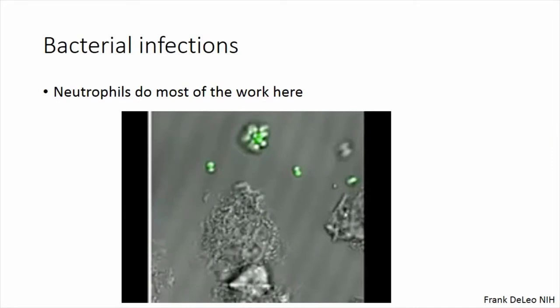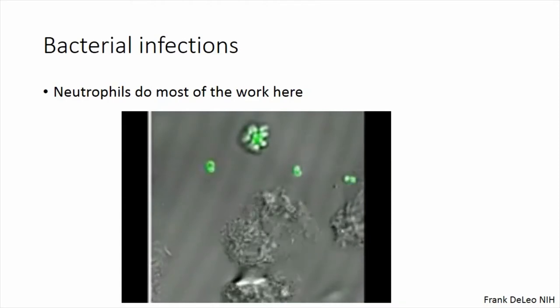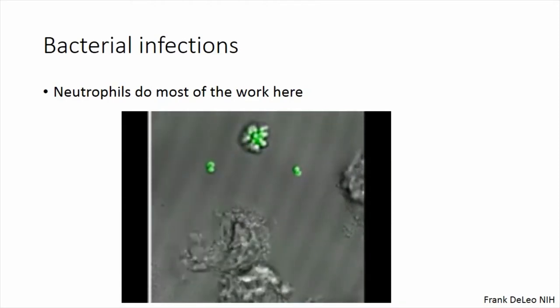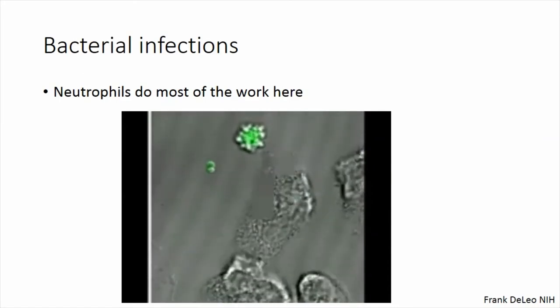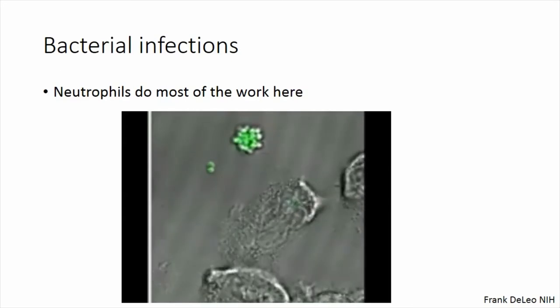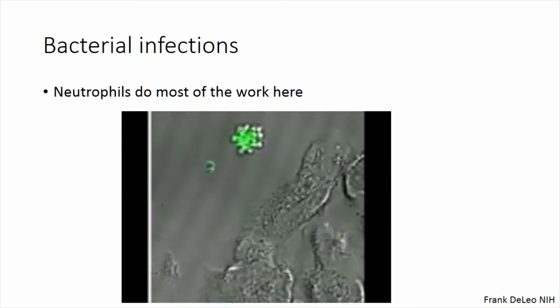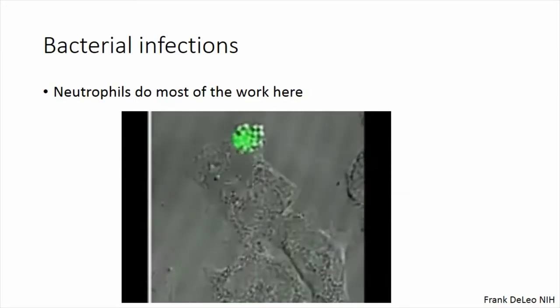I'm going to show you a movie. The two green dots on the right are bacteria—actually Streptococcus pneumoniae. The gray amorphous thing in the middle is the neutrophil. You're going to watch the neutrophil crawl up to the bacteria, engulf it, and eat it. It's super satisfying to watch. Those bacteria are actually gone—digested—they are not going to cause harm. This is what neutrophils do for us every single day.